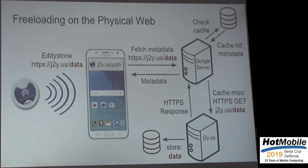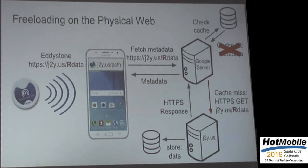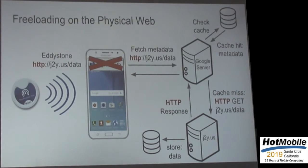There are some design decisions necessary to make this actually transmit data. We have to introduce some randomness to the path to avoid getting stuck in Google's URL cache. Another design decision that played to our favor — somewhat by accident — is that if you omit HTTPS, which is technically required for the Physical Web, everything works except it doesn't get displayed to the user anymore. So you're doing this illicitly and no one really knows.